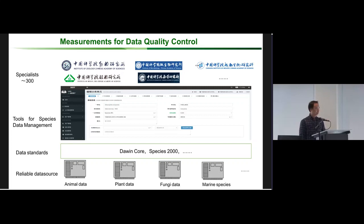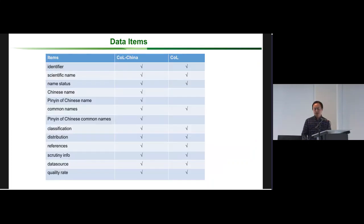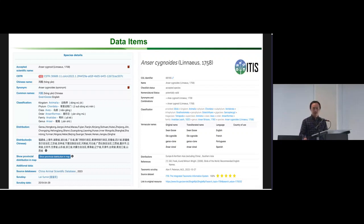We have several measures for data quality control: we select reliable data sources, use uniform data standards, and have tools for species data management, with over 300 taxonomists and specialists involved in this program. Comparing COL China with COL data items, most are the same, but some are special for COL China, like Chinese formal names and Chinese pinyin. COL China includes some data in Chinese.